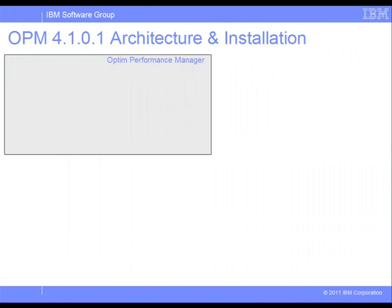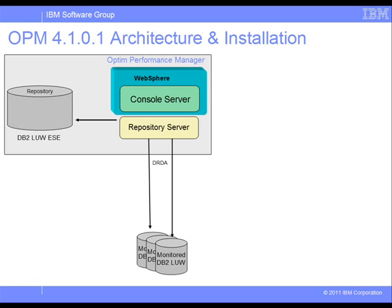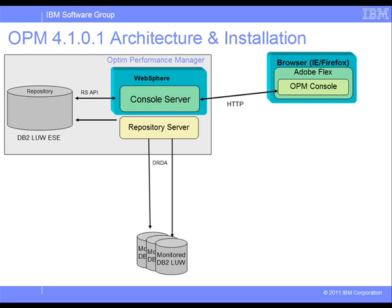Key components of Optum Performance Manager include the repository server, which establishes connections to monitor DB2 databases and mainly uses database snapshot commands and DB2 event monitors to collect database performance data. The server stores this collected data in its repository database. The console server runs as an application in a WebSphere Application Server environment and connects to the Optum Performance Manager repository database, allowing users to use a web interface to retrieve data and configure monitoring behavior.